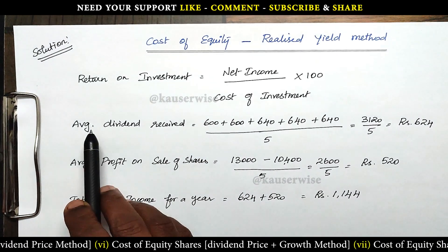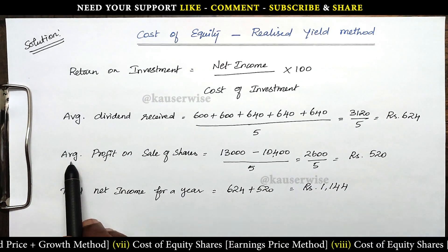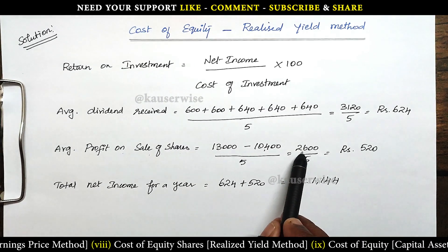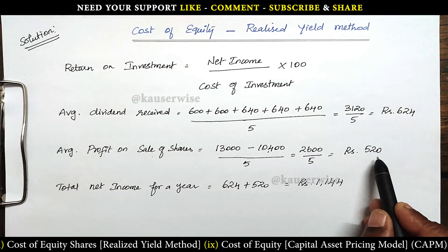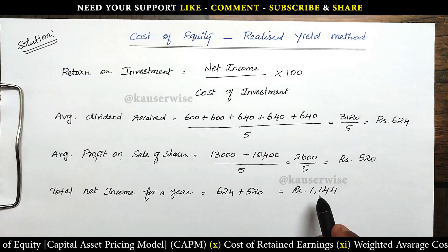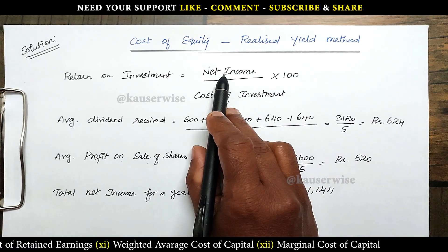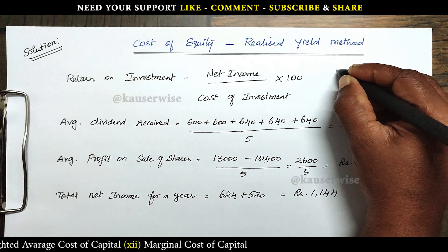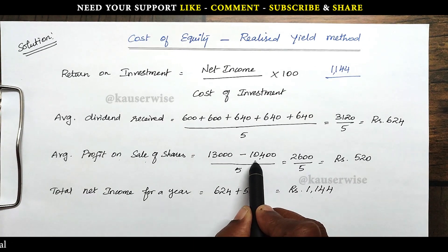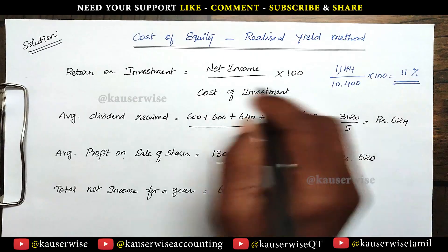The average dividend received (inflow) is total dividend divided by 5 = Rs. 624. Average profit on sale of shares: selling price Rs. 13,000 minus purchase price Rs. 10,400 = difference Rs. 2,600, divided by 5 = Rs. 520. Net income for the year = Rs. 1,144. Applying the formula: 1,144 divided by cost of investment 10,400, into 100 gives 11%. This is the return on investment.